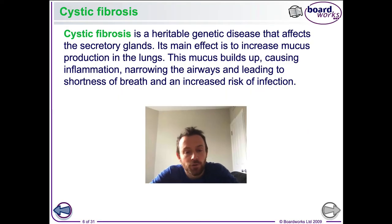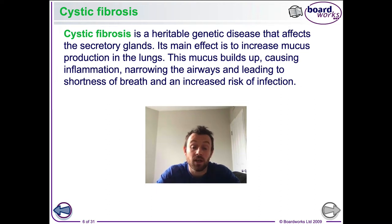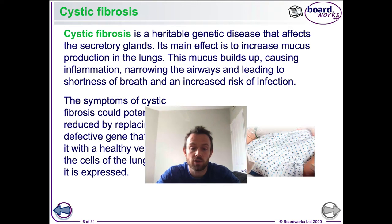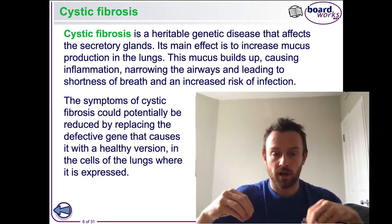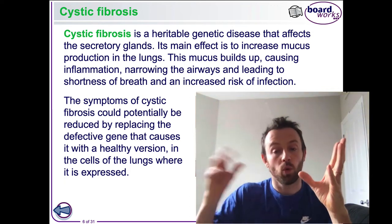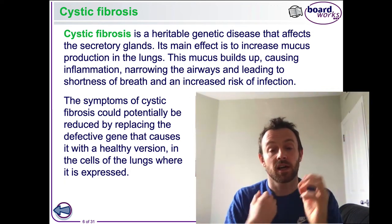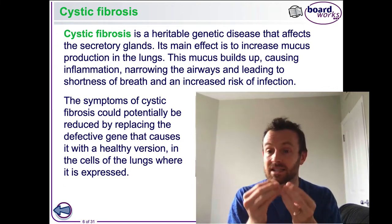Cystic fibrosis is an inherited genetic disease caused by the inheritance of two recessive alleles, and the mutation is in the CFTR gene — a chloride ion transport protein. In a normal patient, when chloride ions move out of the cell, water follows by osmosis, making the mucus more watery and less viscous.